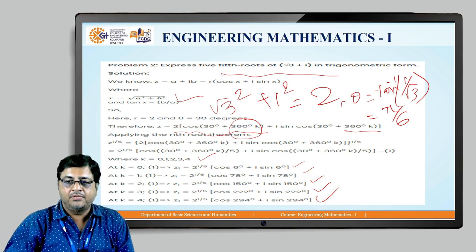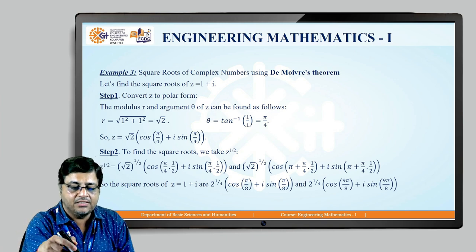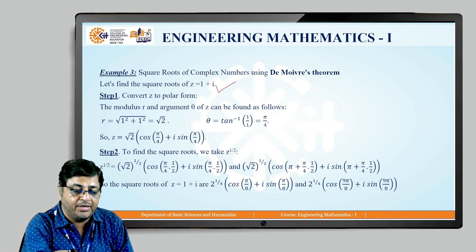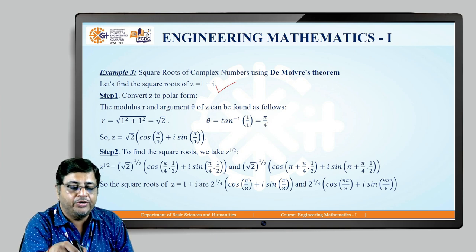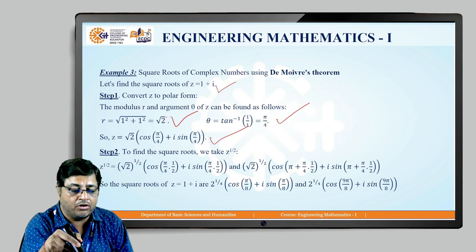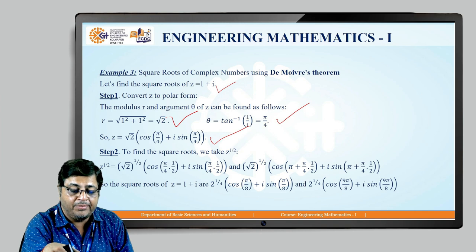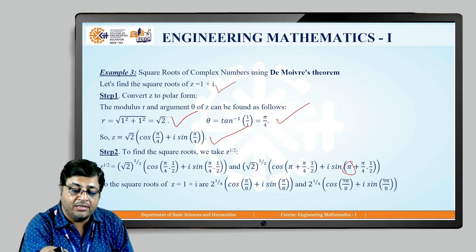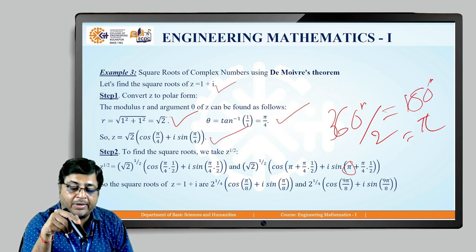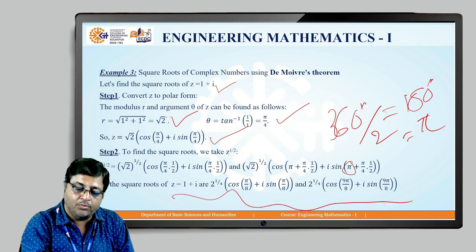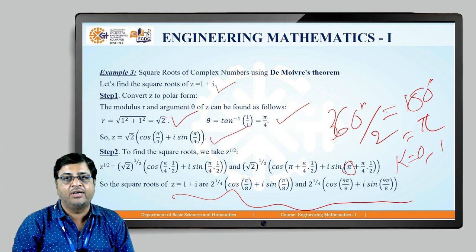Let us take the square root of a complex number. I have taken the example of 1 + i, so I have to find the square root of 1 + i. So r will be √2, θ will be π/4. So z will be √2 times (cos π/4 + i sin π/4). So z raised to 1/2 will be √2 raised to 1/2 times (cos(π/4 · 1/2) + i sin(π/4 · 1/2)). Another root will use cos(π + π/4) · 1/2 + i sin(π + π/4) · 1/2, where the π comes from 360°/2 = 180° = π. So we get the two roots by putting k = 0 and k = 1.